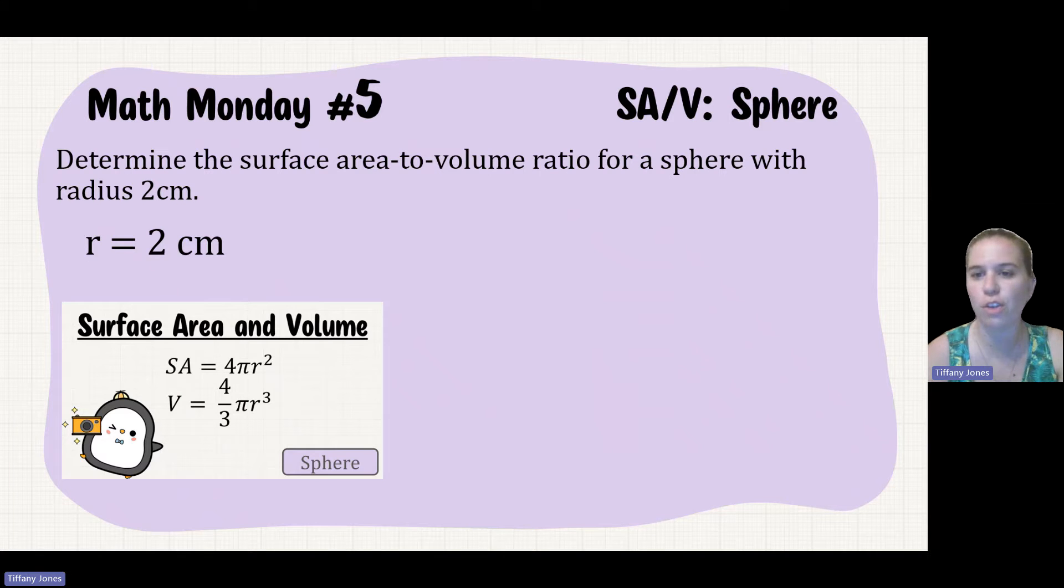Determine the surface area to volume ratio for a sphere with a radius of 2 centimeters. So our radius or our r is 2 centimeters. So we'll sub this in.